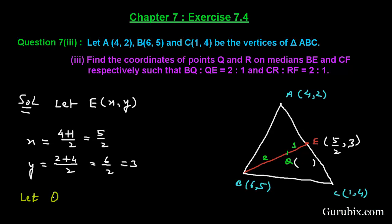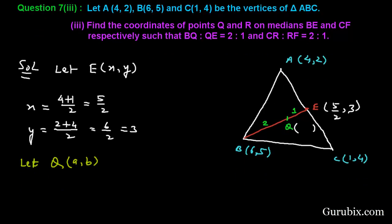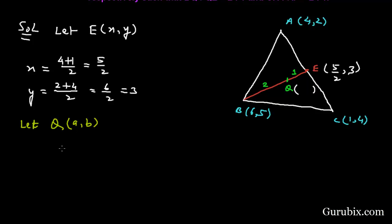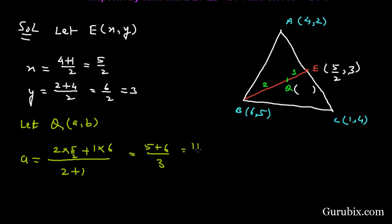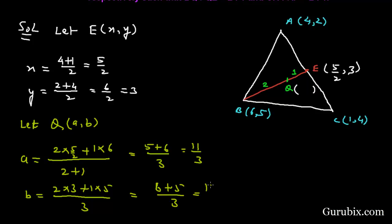Let the coordinates of Q be (a, b). We shall use the section formula to find the coordinates of Q. So the x-coordinate of Q will be (2 × 5/2 + 1 × 6) over (2 + 1), which gives 5 + 6 over 3, which is 11 over 3. The y-coordinate of Q will be (2 × 3 + 1 × 5) over 3, giving 6 + 5 over 3, which is 11 over 3. Therefore the coordinates of Q are (11/3, 11/3).